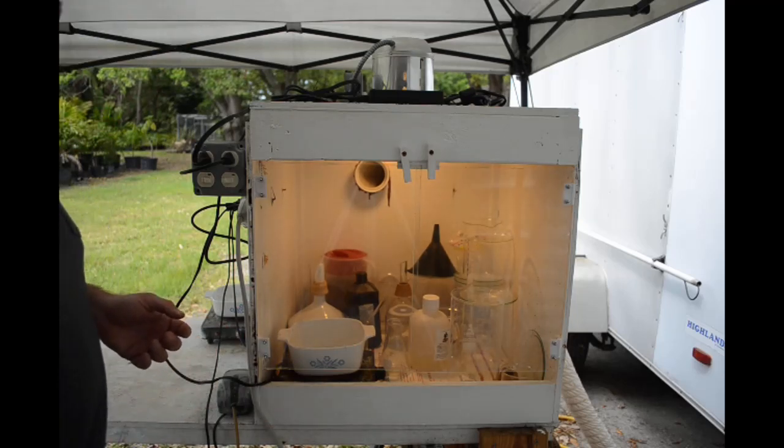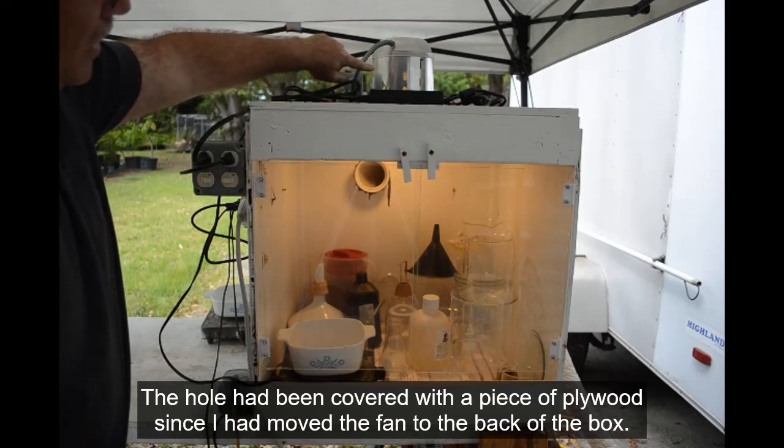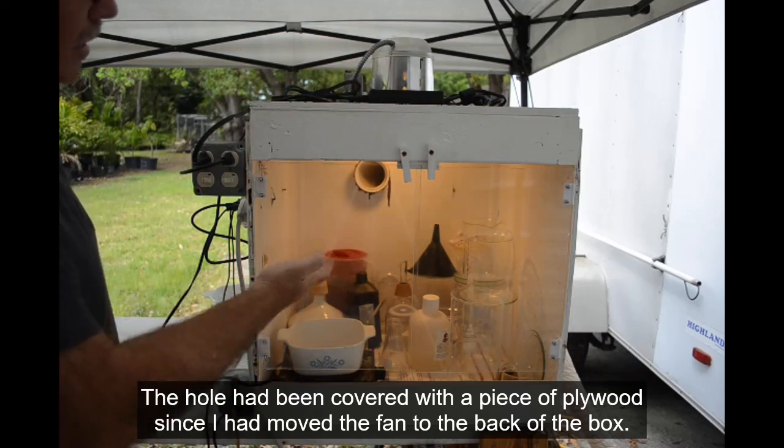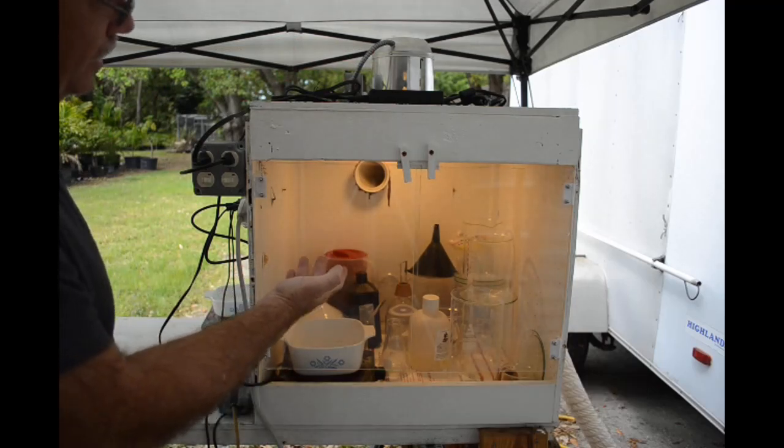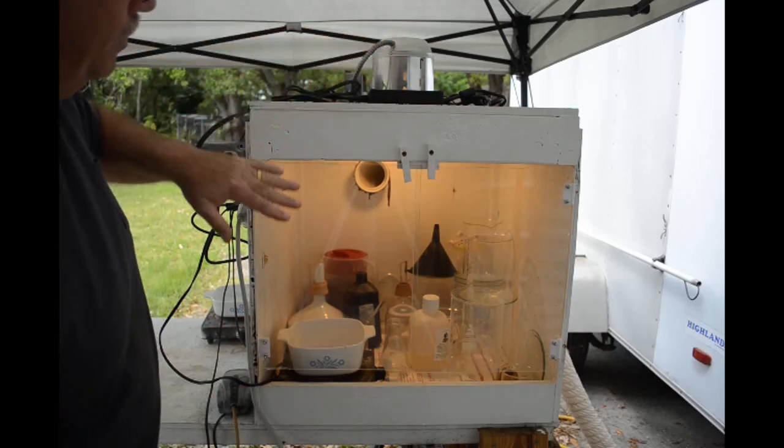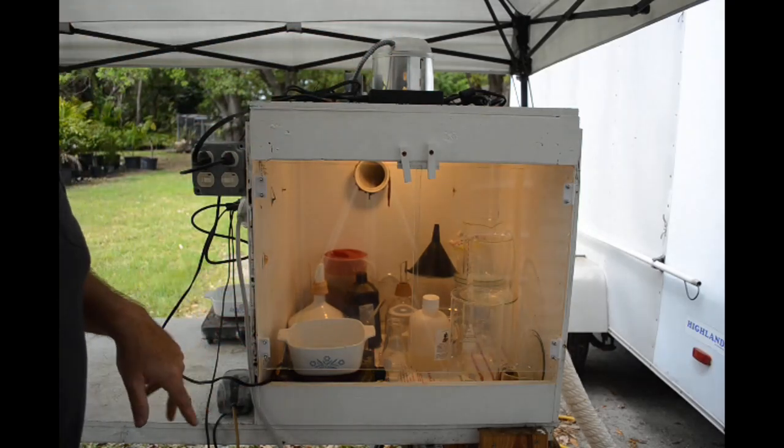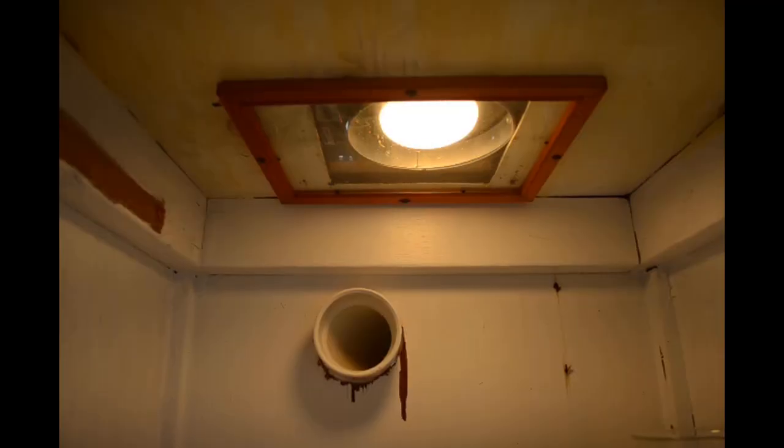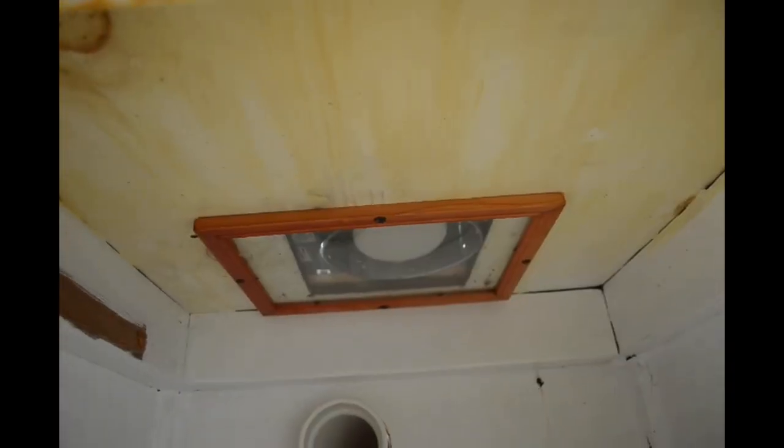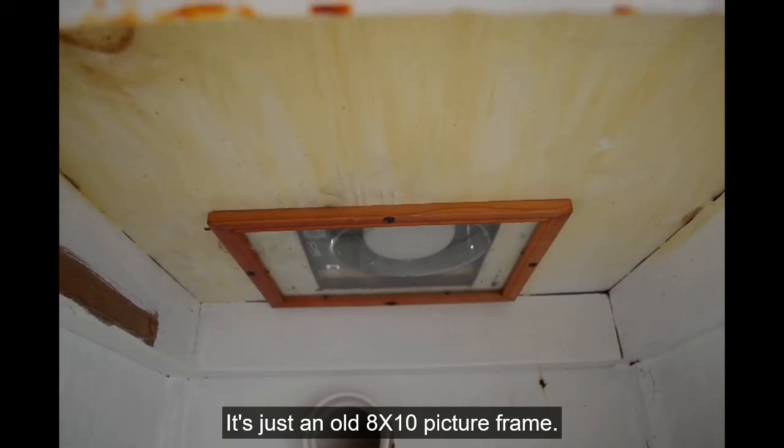I thought about explosion proof lights but they're all made of metal that's going to be rapidly attacked by the chemicals. So I thought, I've got this hole in the top, what if I just mount a light up here above the top of the fume hood and then put a sheet of glass in there for the light to shine through.